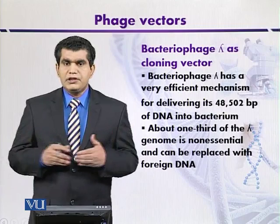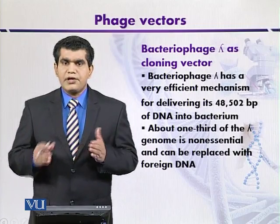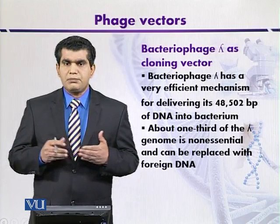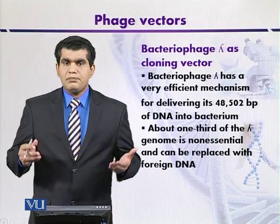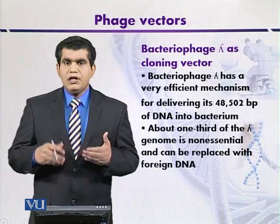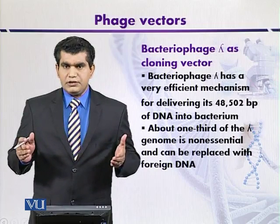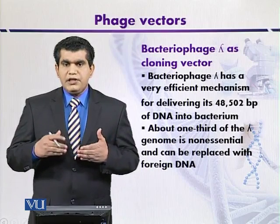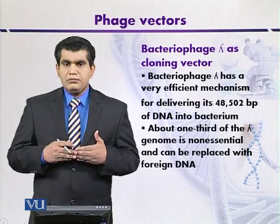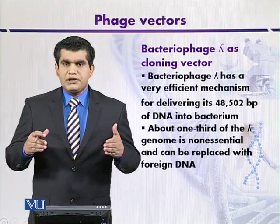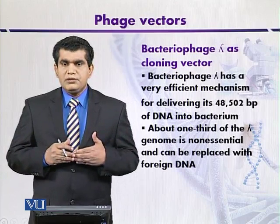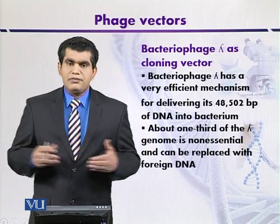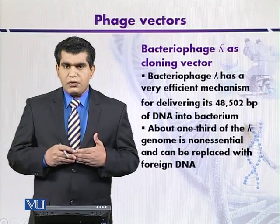At the phi prime ends on both sides — either the right side or the left side — phi prime projections are present that are unpaired. These unpaired projections are complementary to each other. So when they enter into the host bacterium, this complementary base pairing allows them to join with each other, and the genomic DNA of lambda phages can assume a circular form.